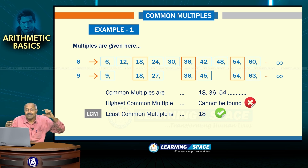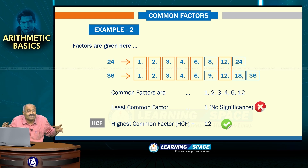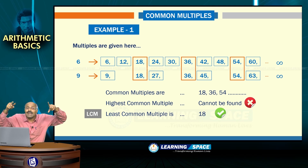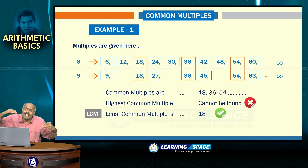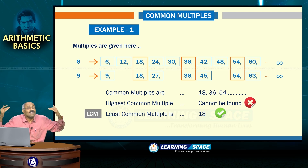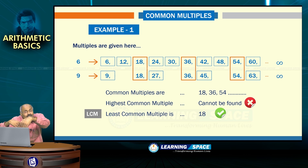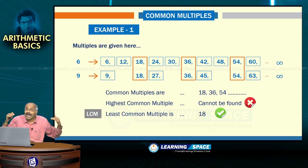What I mean to say is: when finding factors, you can write all factors because factors are finite and fixed. But when taking multiples of 6 and 9, you can only write multiples up to some extent because multiples are infinite. After writing a few multiples, you find the common multiples — in this case 18, 36, 54. Out of the common multiples, what is significant is the least common multiple, which is 18. So LCM is 18 here. The highest common multiple cannot be found.